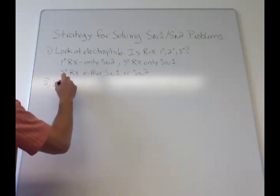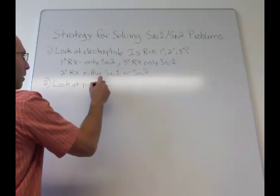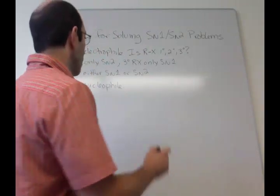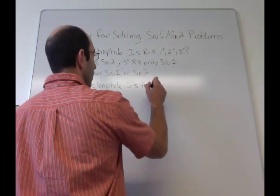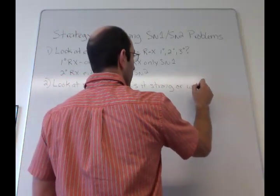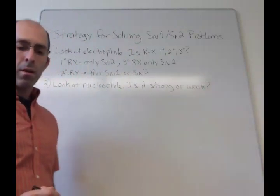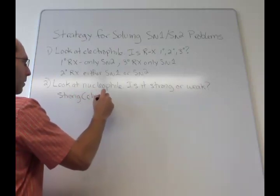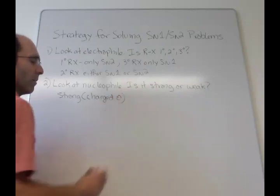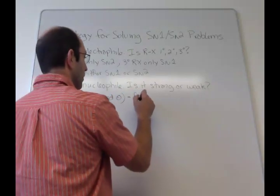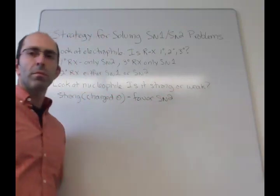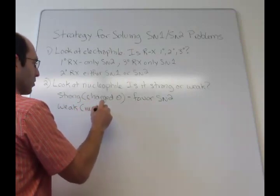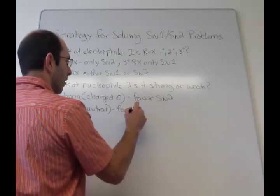So the second step is look at the nucleophile. The question you ask there is, is the nucleophile strong or weak? If it's strong, which usually means that it's charged, that favors SN2. If it's weak, generally meaning that it's neutral, that's going to favor SN1.